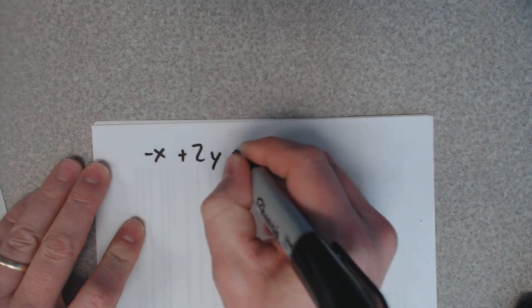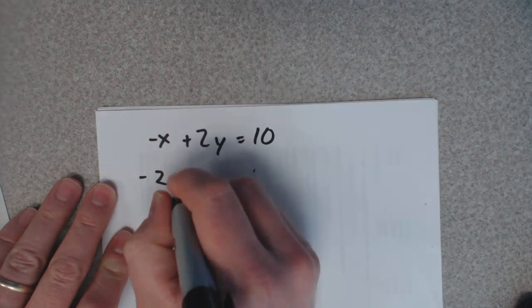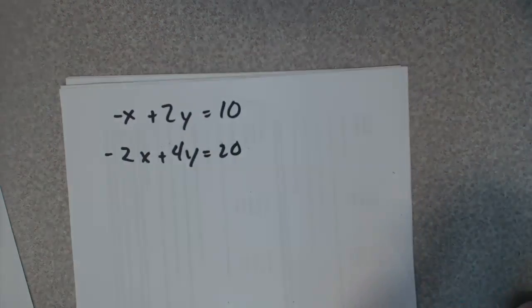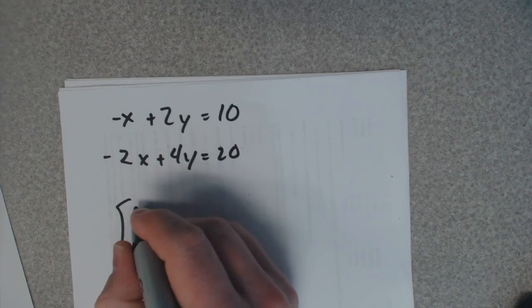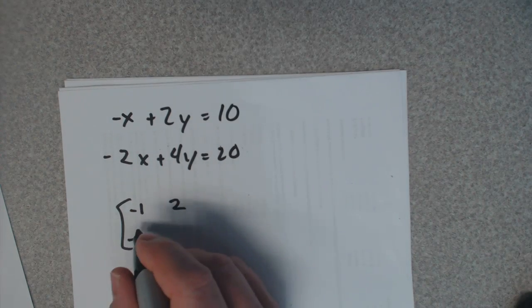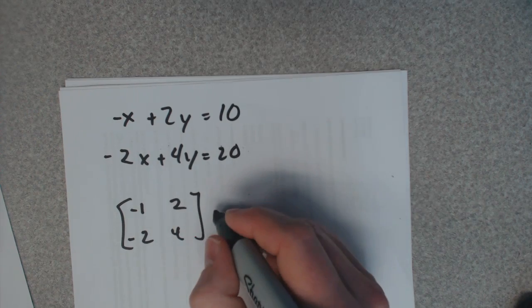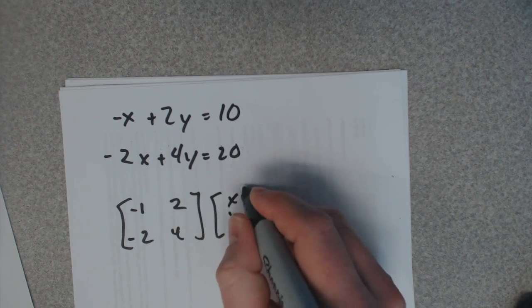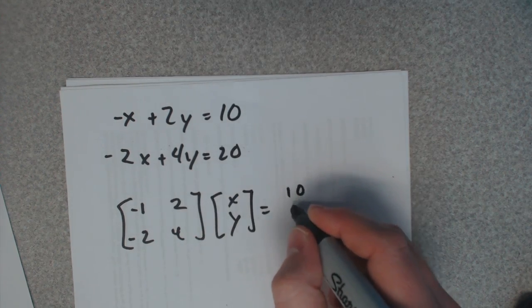Negative x plus 2y equals 10, negative 2x plus 4y equals 20. So what is A here? Negative 1, 2, negative 2, 4, x, y, and B would be 10, 20.